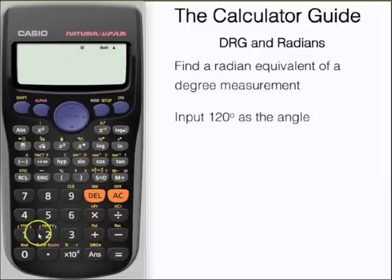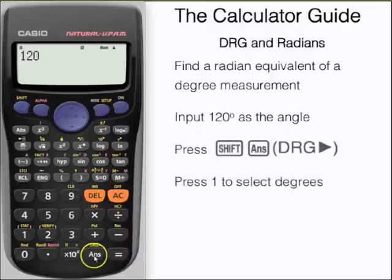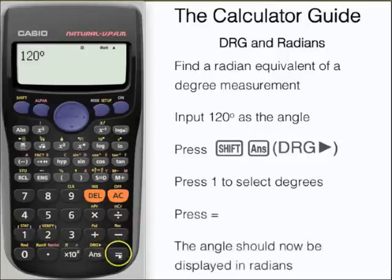We're going to input 120 degrees to find out what the radian equivalent is. Input 120 and access the DRG function, and this time we want to press 1 as our measurement is in degrees. Press equals, and here we have the radian equivalent, 2 thirds pi or 2 pi over 3.